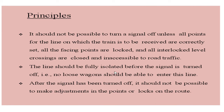The line should be fully isolated before the signal is turned off — meaning before green is displayed. Turned off means green in semaphore terminology: when the semaphore signal is in a slanting position, it implies the line is clear. Once the line is fully isolated with nothing on it, only then should the signal show green. It should not be possible for loose wagons to enter the line after the signal has been given.